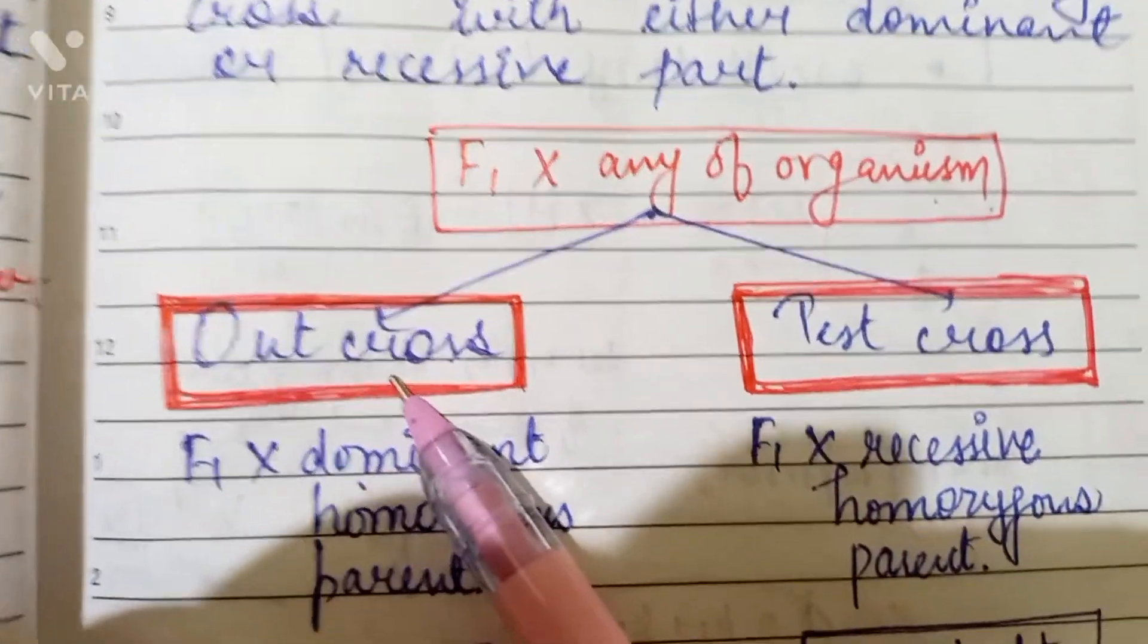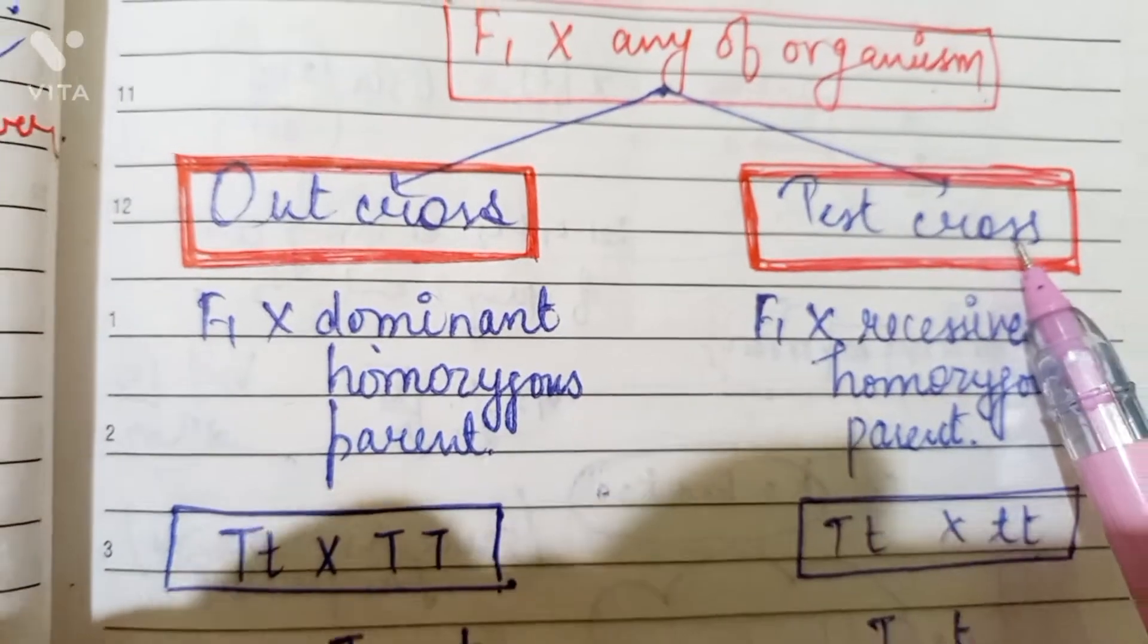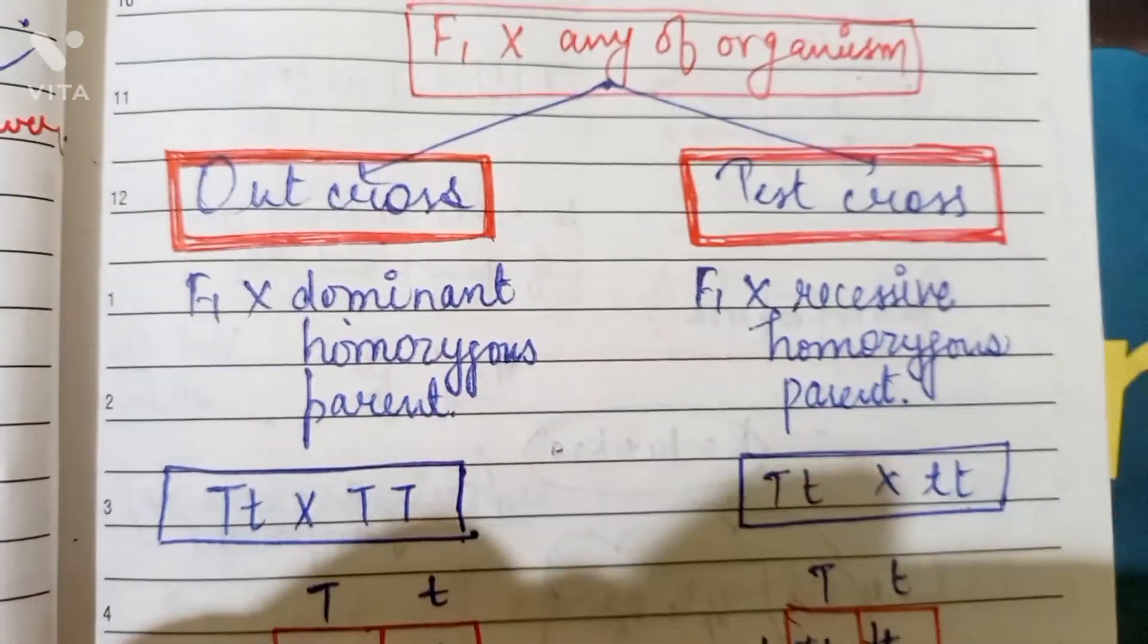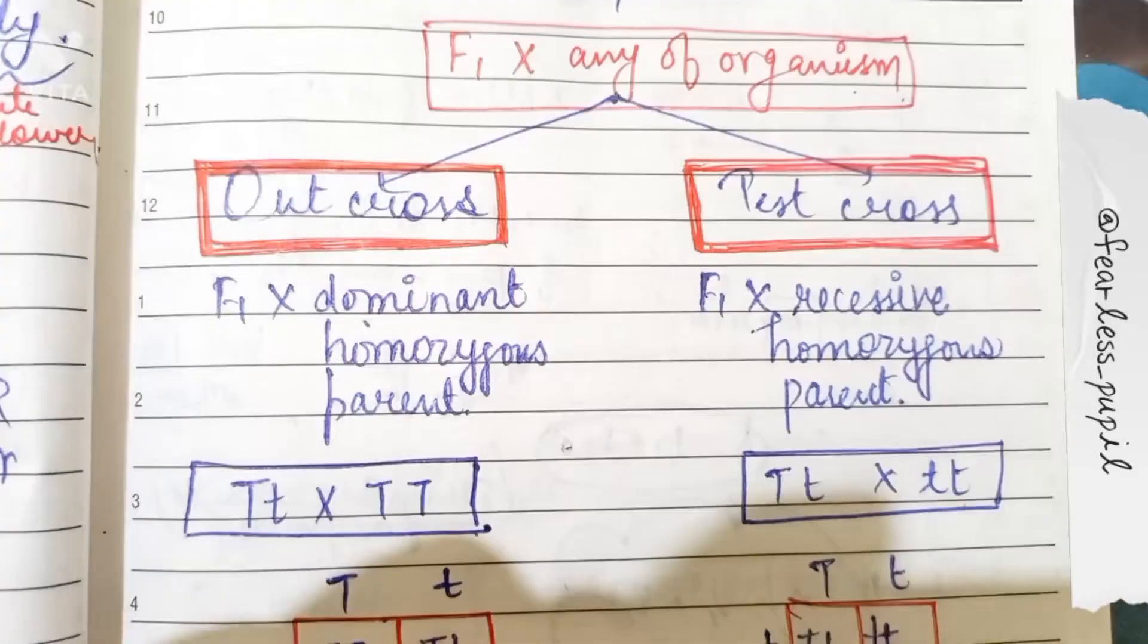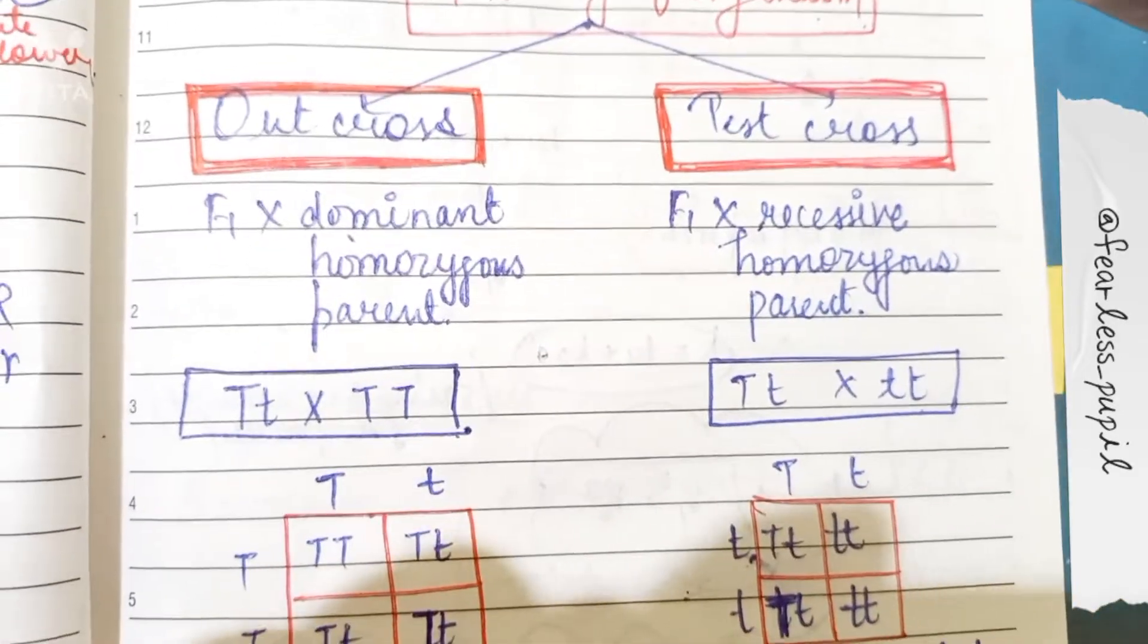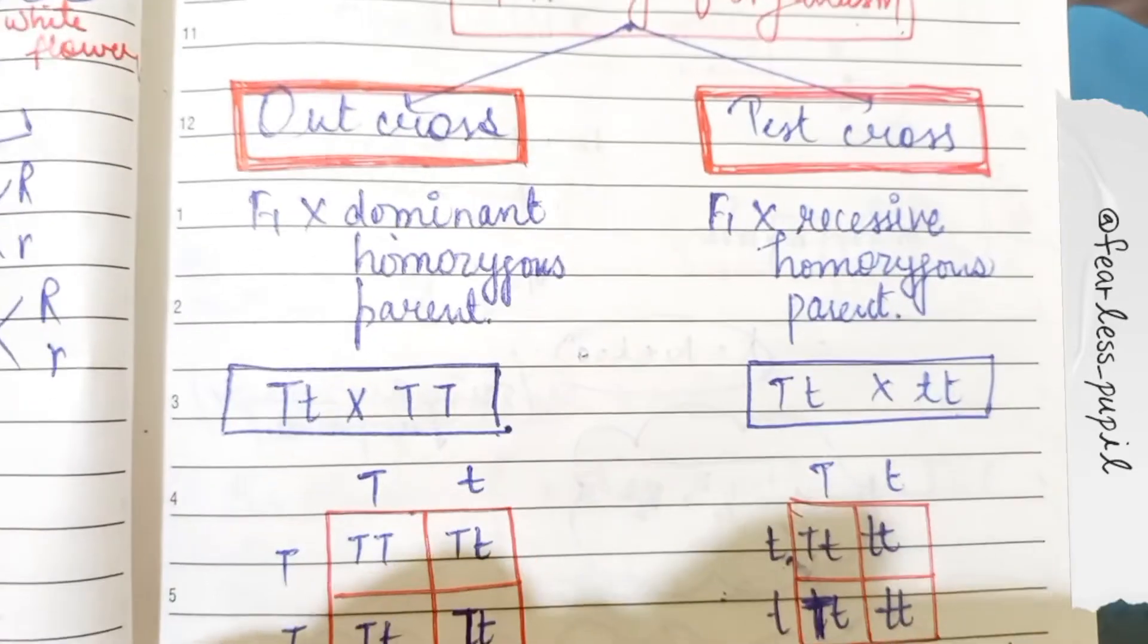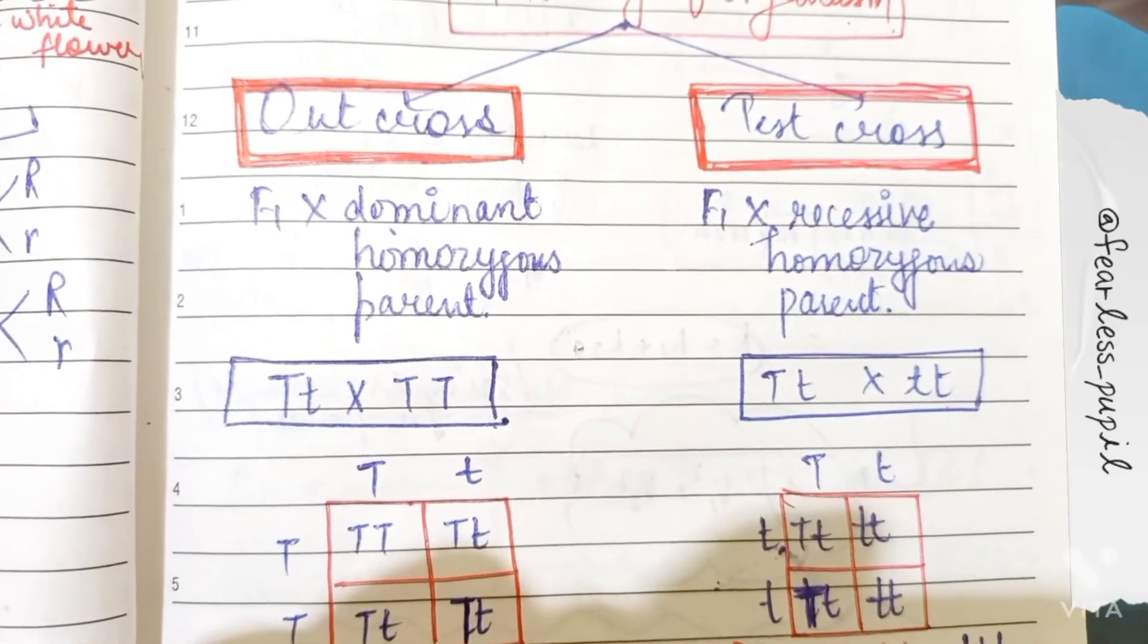Here there is the outcross and there is a testcross. In the outcross, the F1 parent is crossed with dominant homozygous parent, and in the testcross, F1 generation is crossed with recessive homozygous parent.